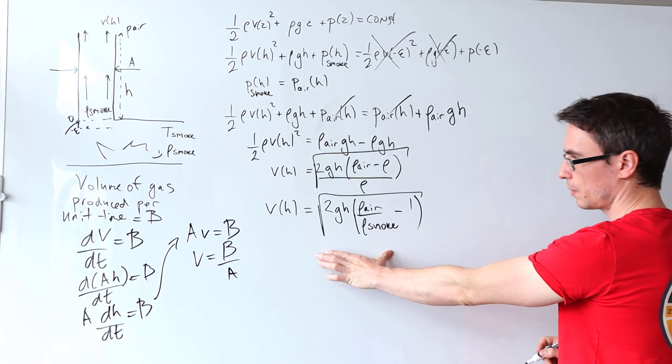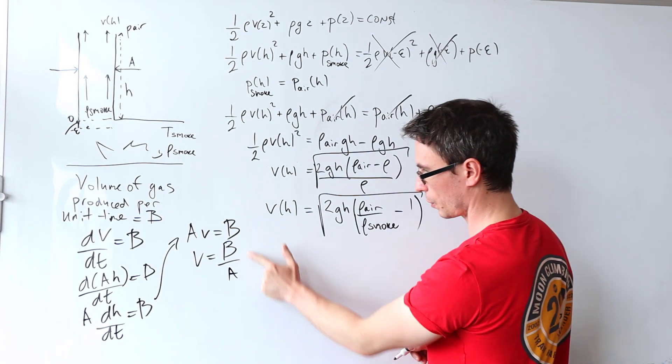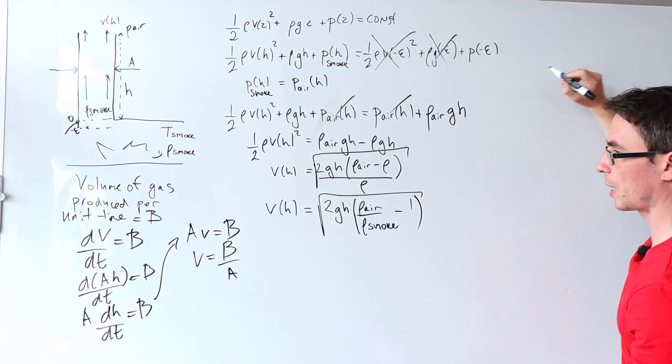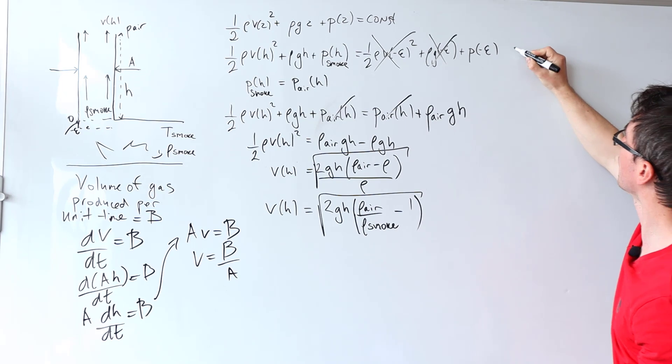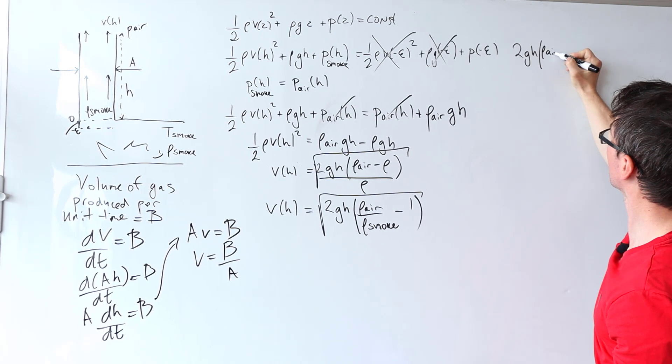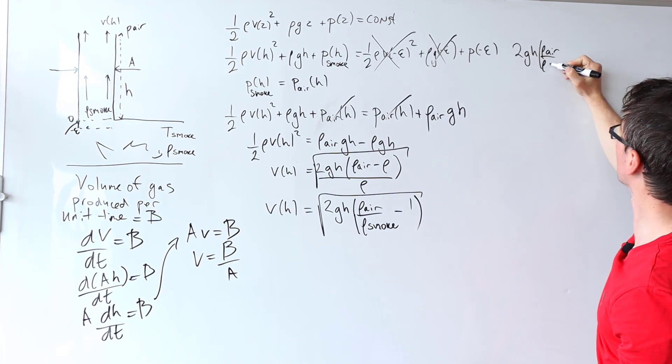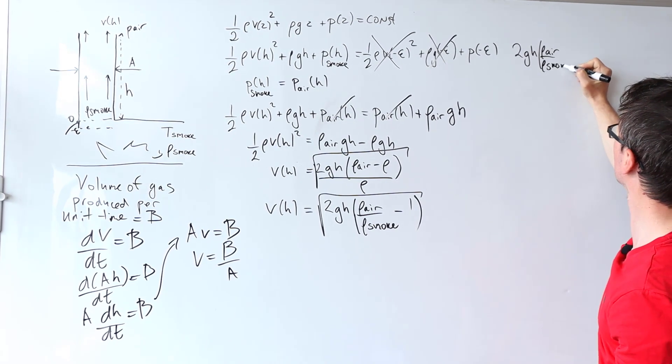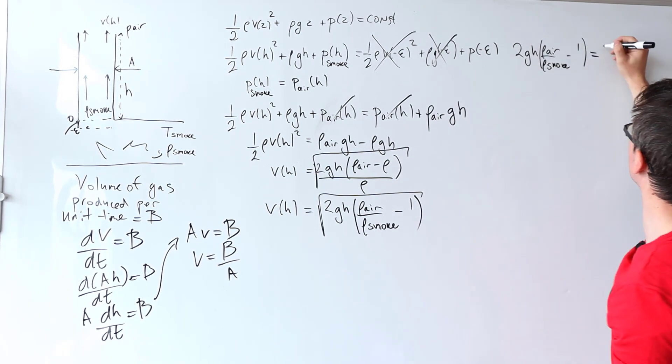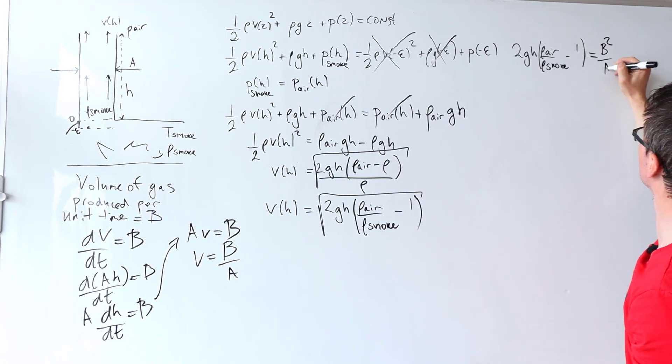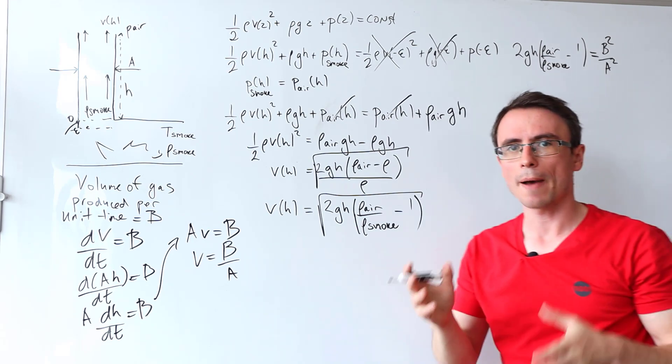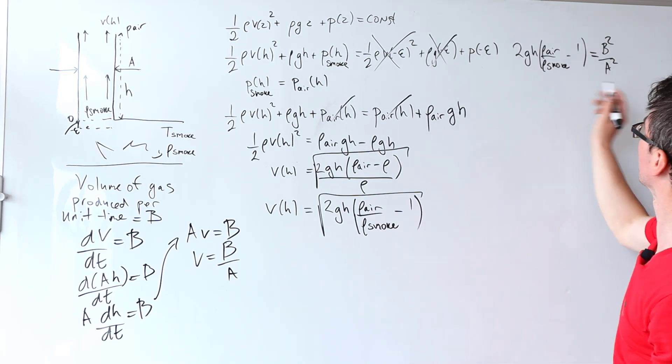Well, we know that v is equal to this but it's also equal to that. So what I'm going to do, let's say over here, is to say that the square root of 2gh multiplied by density of air divided by the density of the smoke take away 1, and because I've squared this I need to square b squared divided by a squared. Okay, so we're kind of getting there now we can find an expression for the height.